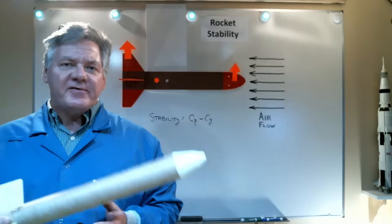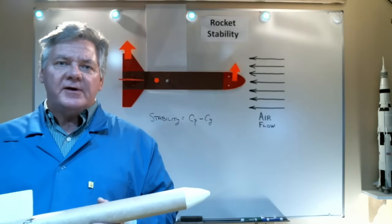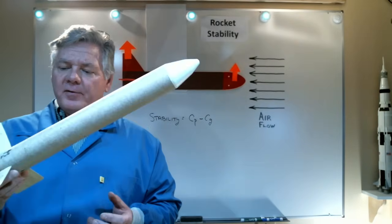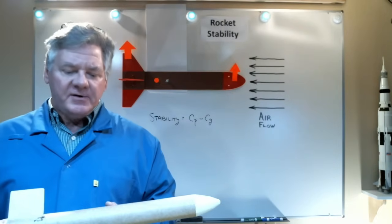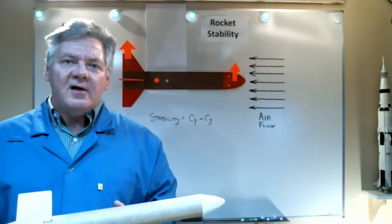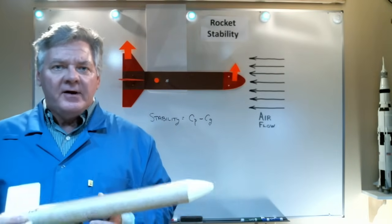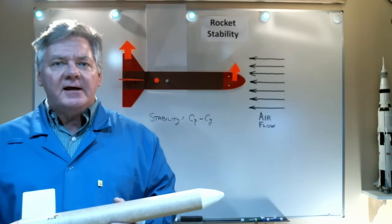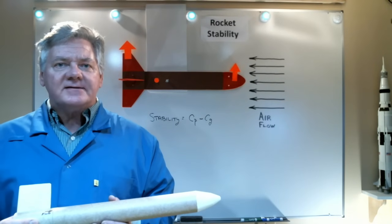In conclusion, it looks like the shadow method didn't do a very good job at predicting the location of the center of pressure. However, OpenRocket seems to have done a real good job, which gives me confidence to use that software on future rocket designs. Well, I hope you learned a little bit about rocket stability, and I hope to see you next time on LabRat Scientific.